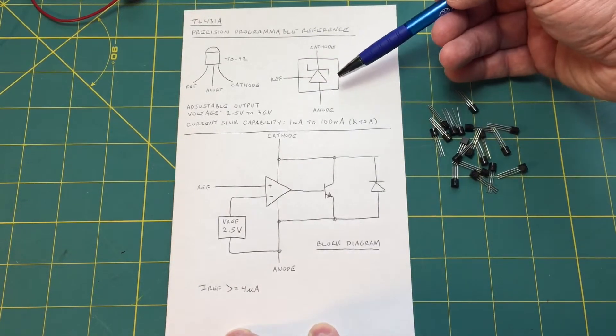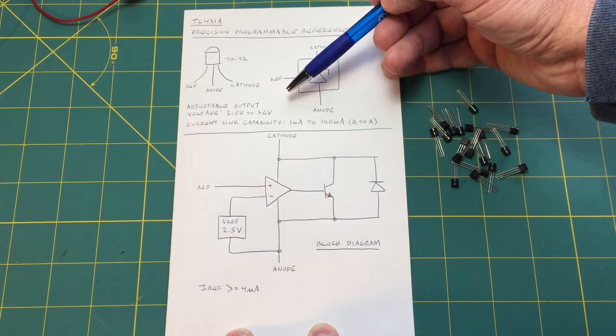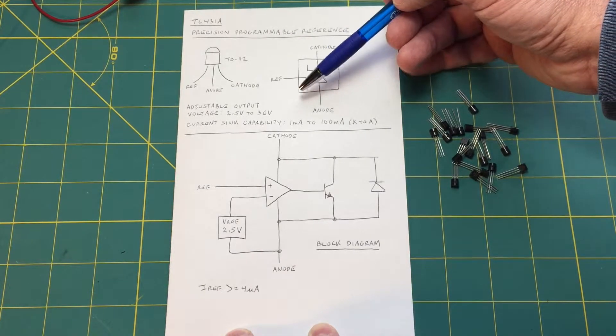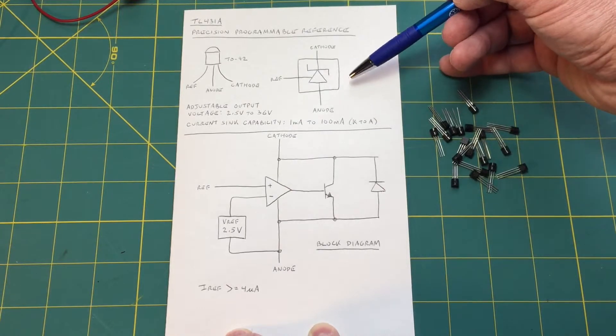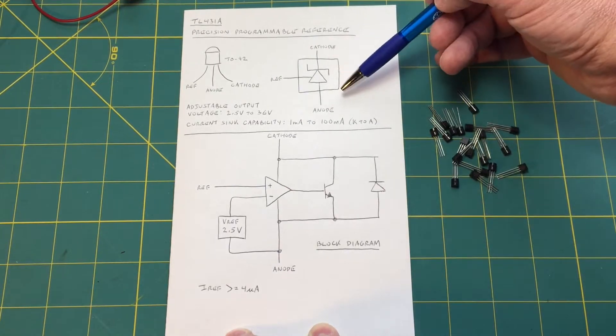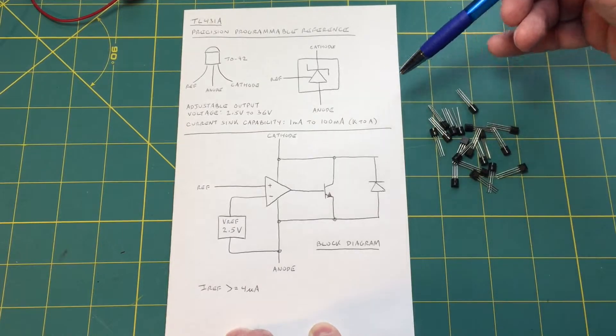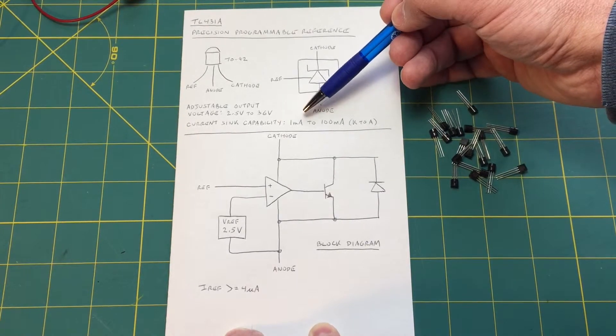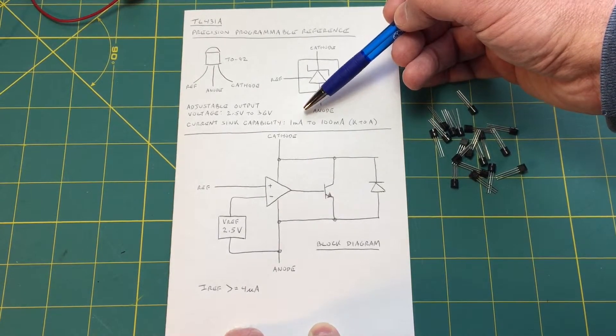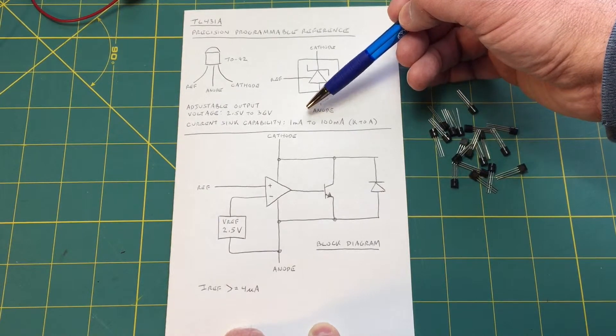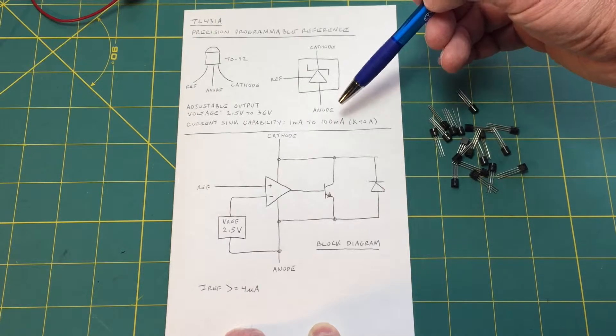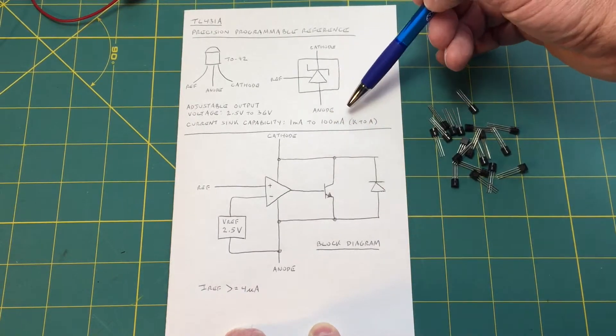Now this device can provide an output voltage between 2.5 to 36 volts and it has a current sink capability from cathode to anode of between 1 and 100 milliamps. Now 1 milliamp is the minimum amount of current that you can sink or the minimum amount that you have to sink rather, and as you can see when we get to the block diagram I'll explain why.